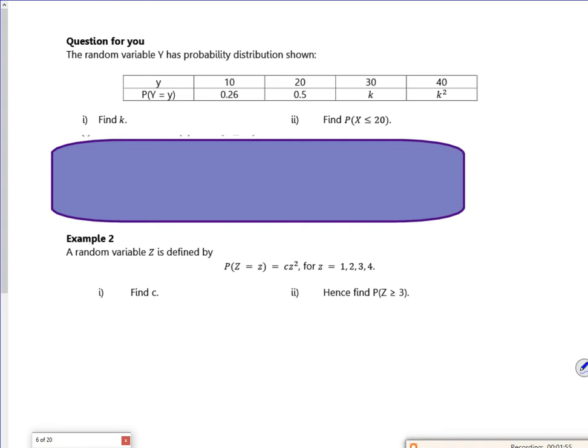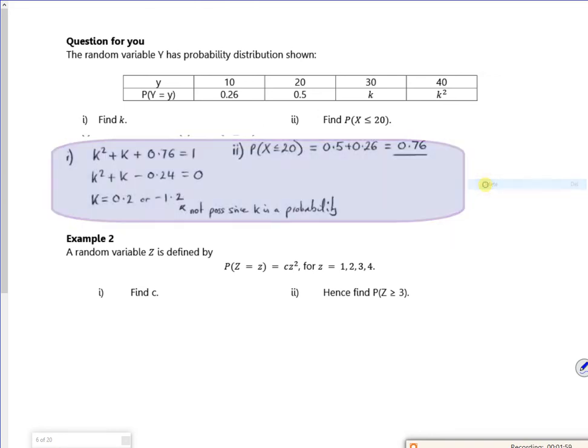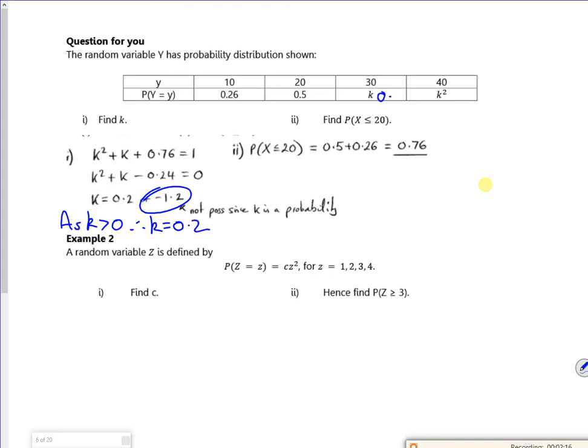Right, so the next question for you. You create an equation and solve it as a quadratic. Well, we can't have negatives, so it must be 0.2. So I'd write as k is greater than 0, k equals 0.2. So that's 0.2, and that's 0.2 squared, 0.4.